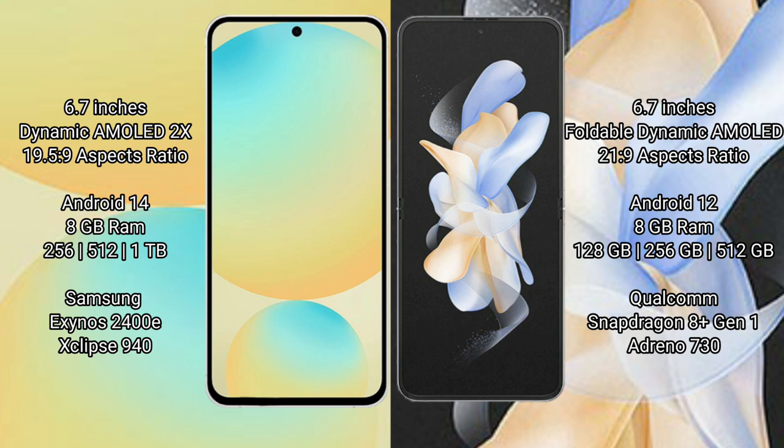Samsung Galaxy S24 FE comes with 8GB RAM and 128GB, 256GB, or 512GB internal storage, powered by the Samsung Exynos 2400E processor with GPU 940. Samsung Galaxy Z Flip 4 comes with 8GB RAM and 128GB, 256GB, or 512GB internal storage, powered by the Qualcomm Snapdragon 8 Gen 1 processor with Adreno 730 GPU.